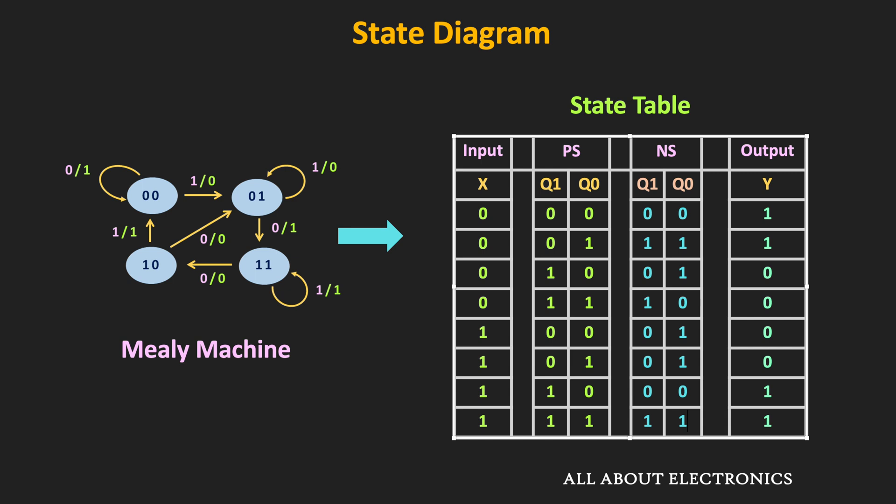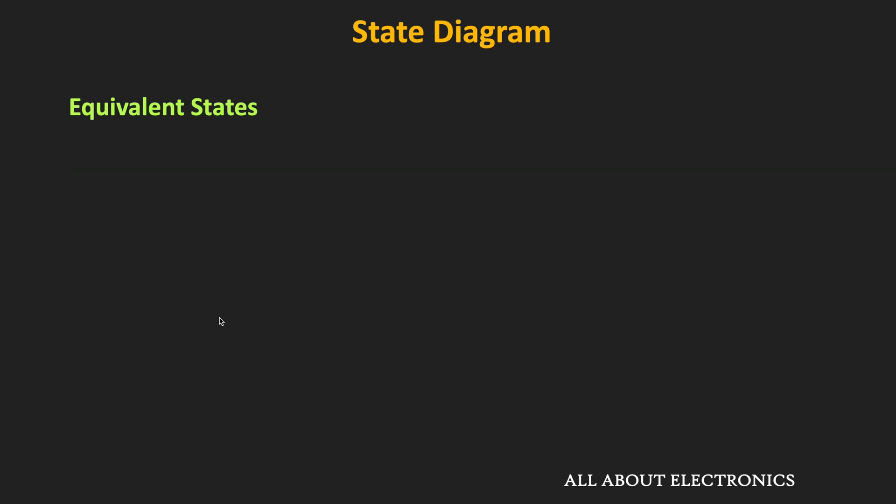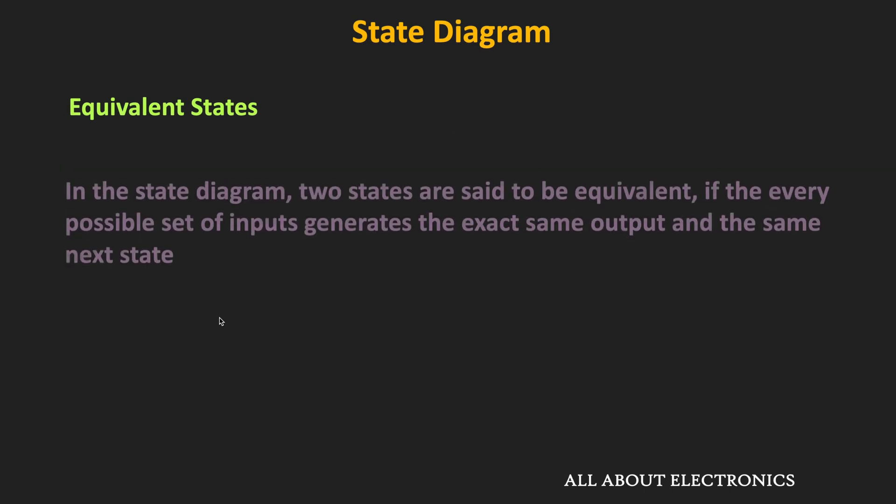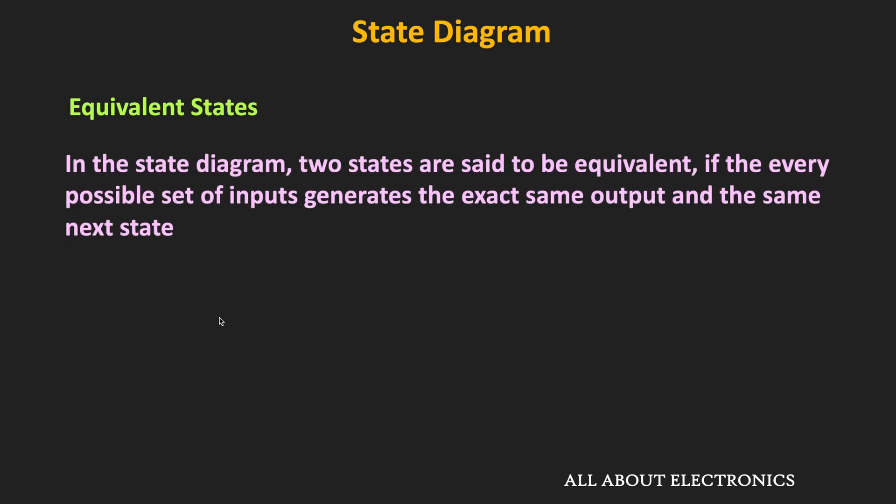Basically, by removing the redundant states, we can reduce the cost and the complexity of the sequential circuit. To remove the redundant states, first we need to find out the equivalent states in the state diagram. The two states are said to be equivalent if every possible set of inputs generates the same output and the same next state. Let us take one example and understand how to find the equivalent state in the state diagram.